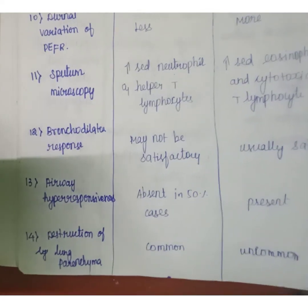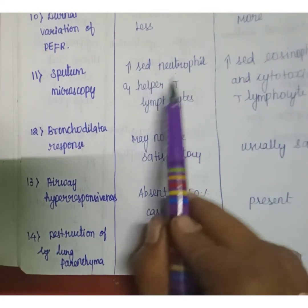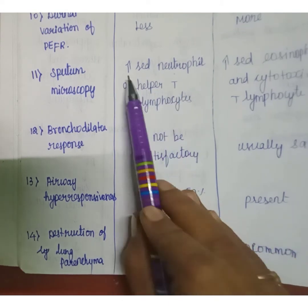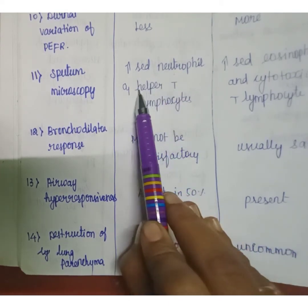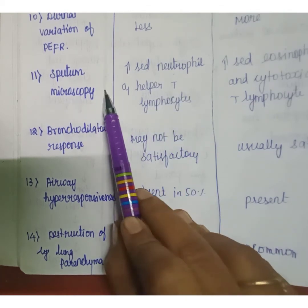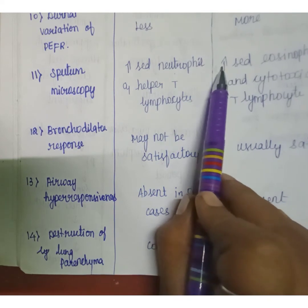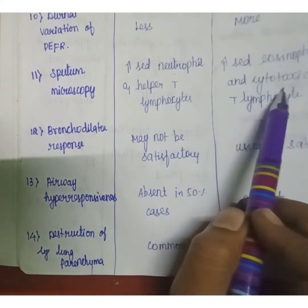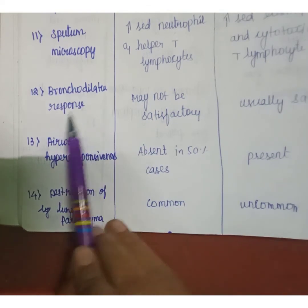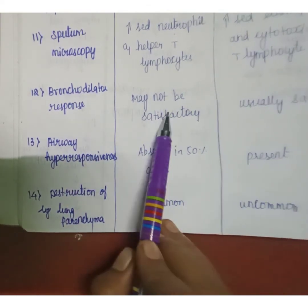In sputum microscopy, COPD shows increased neutrophils and helper T lymphocytes. In asthma, there are increased eosinophils and cytotoxic T lymphocytes.